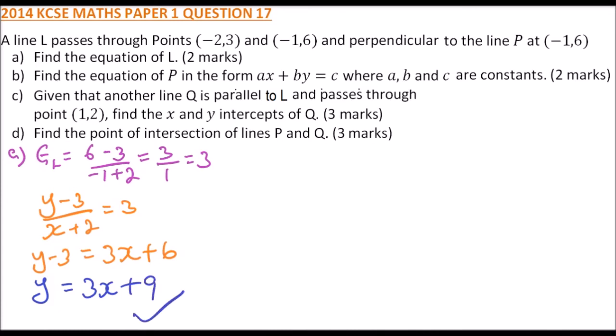That is the equation of l. Now part b: find the equation of p in the form ax plus by equals c, where a, b, and c are constants. Because line p is perpendicular to line l, its gradient equals minus a third, because when you multiply minus a third times 3 you get minus 1.